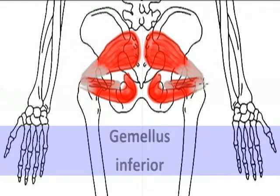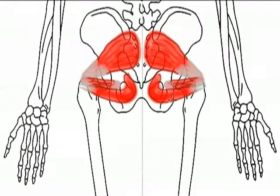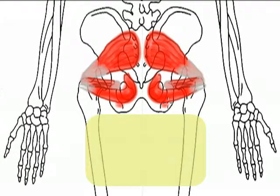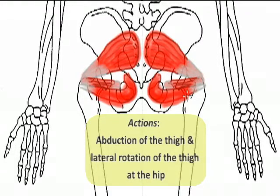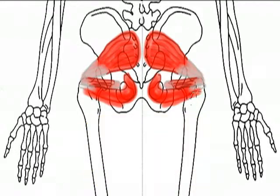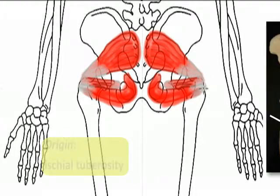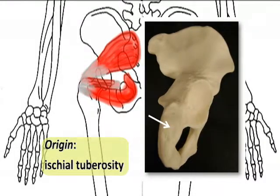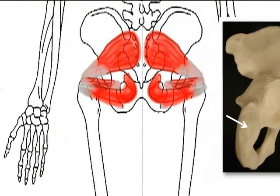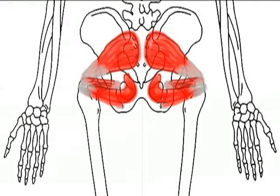The inferior gemellus is a twin of the superior gemellus. It has the same shape — it's a thin strap-like muscle — and it has the same actions as the superior gemellus and the other muscles in this set. It has the same insertion on the greater trochanter of the femur. The main difference is its origin. It originates from the ischial tuberosity, which is the rough region located on the ischium of the coxal bone, the posterior seat bone.